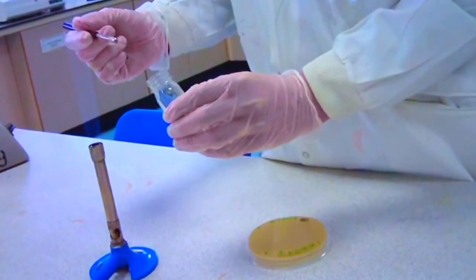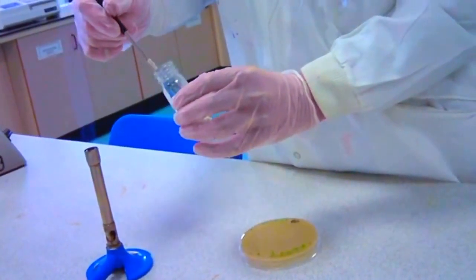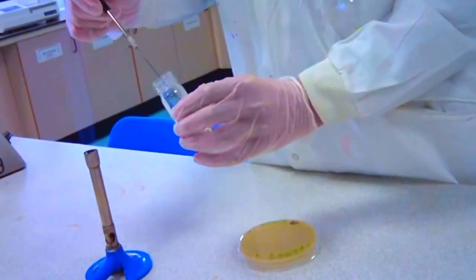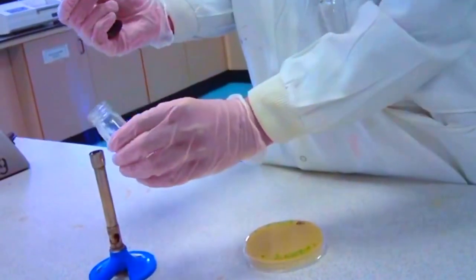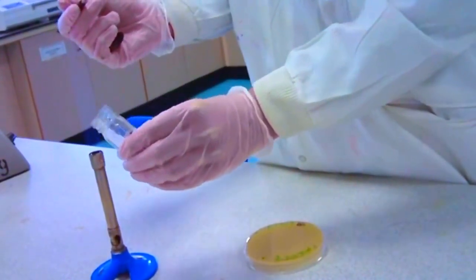Once the bottle is sterile, put the loop into the suspension without touching the sides of the bottle. Remove the loop and then reflame the neck of the bottle before closing the lid to sterilize.